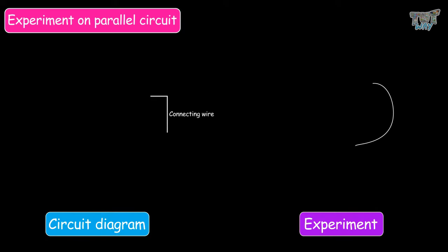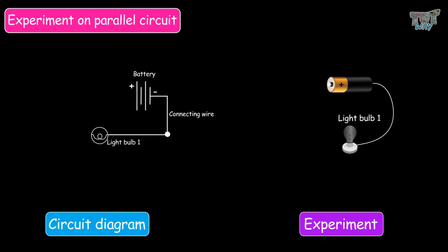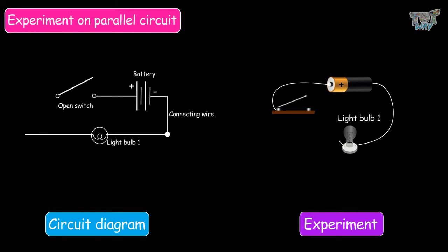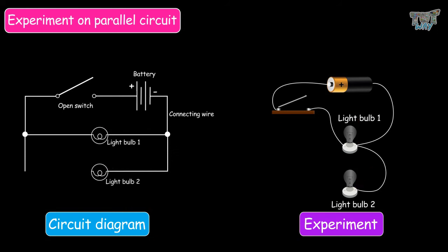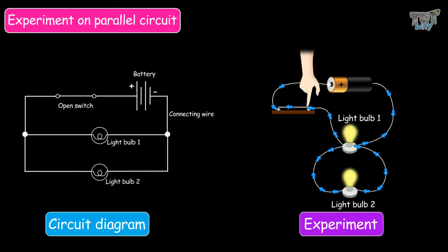Now let's conduct an experiment on the circuit. We will first make a parallel circuit. Take a connecting wire and attach one end to one of the terminals of a battery, and the other end to the right side of the bulb. Attach another wire to the other terminal of the battery and connect it to one of the terminals of the switch. Get another connecting wire and connect one end to the left side of the light bulb and the other end to the terminal of the switch. To add one more bulb, take another connecting wire, attach one end to the right side of the first bulb and the other end to the right side of the second bulb. Attach another wire to the left side of the first bulb and connect it to the left side of the second bulb. Your parallel circuit is ready. Now take out any bulb from the circuit — the rest of the bulbs will keep on glowing regardless of one bulb being removed.